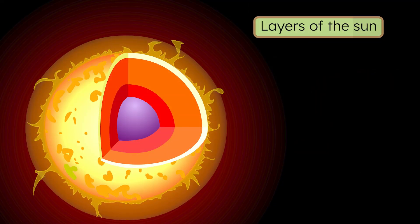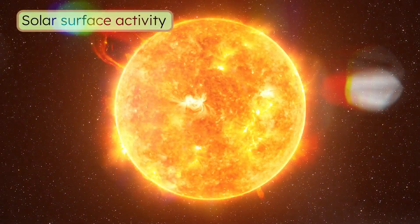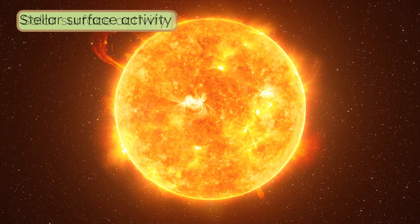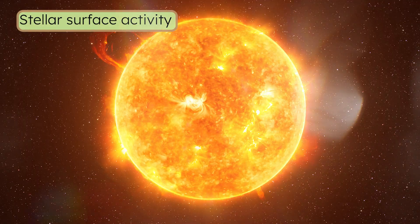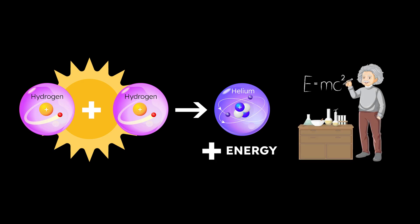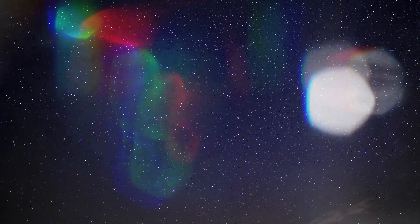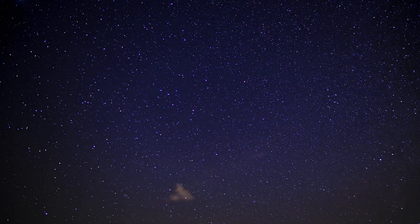For example, the layers of the sun? Other stars have them too. The dramatic surface activity? Yup. Sunspots, flares, solar wind, they're not unique to our sun. And nuclear fusion, where a little bit of mass gets converted into a whole lot of energy thanks to Einstein's famous equation, E equals mc squared? This process powers every star that you see in our night sky.